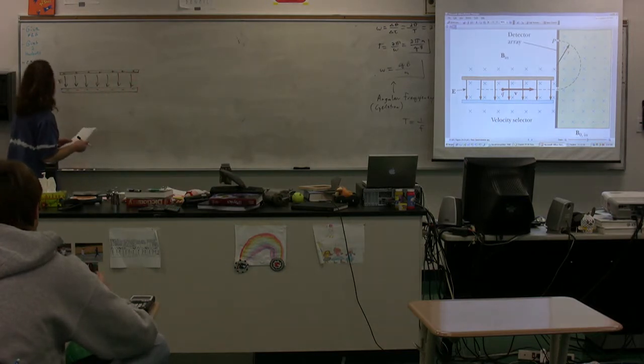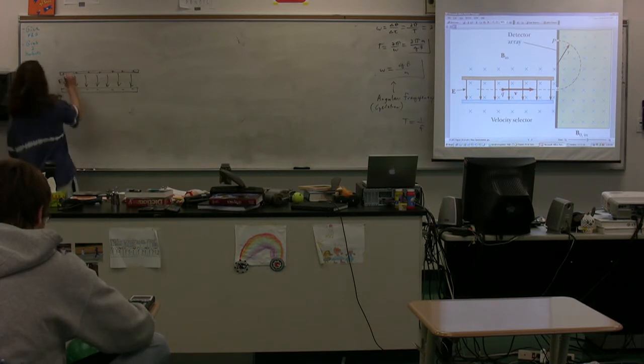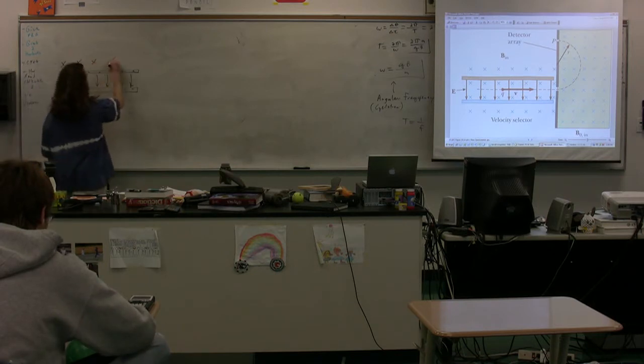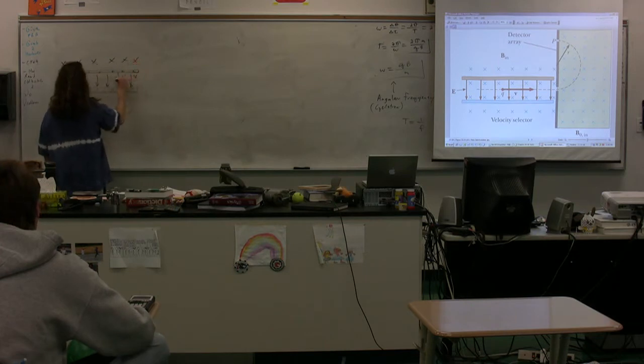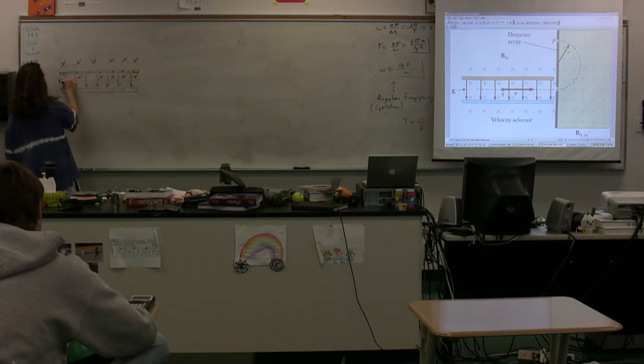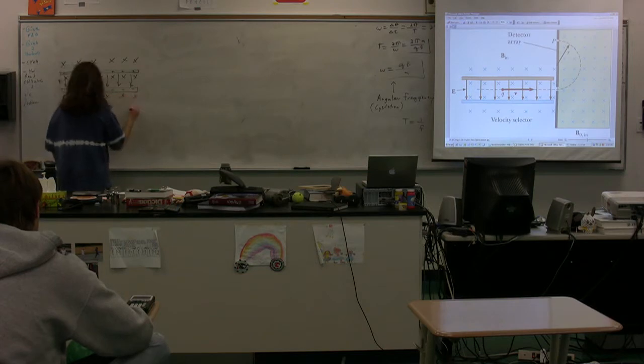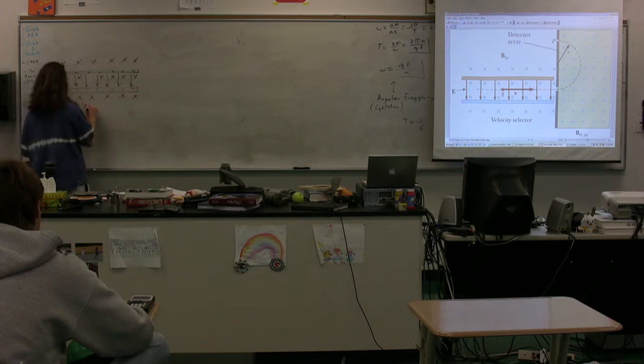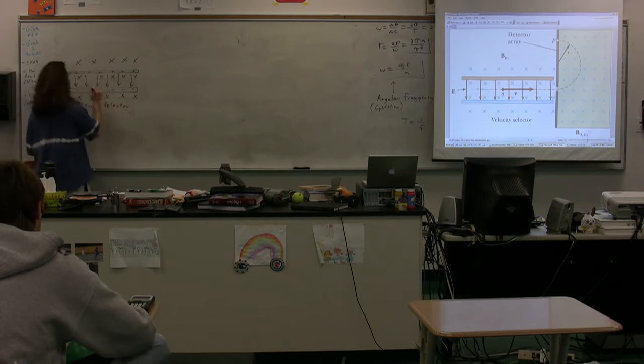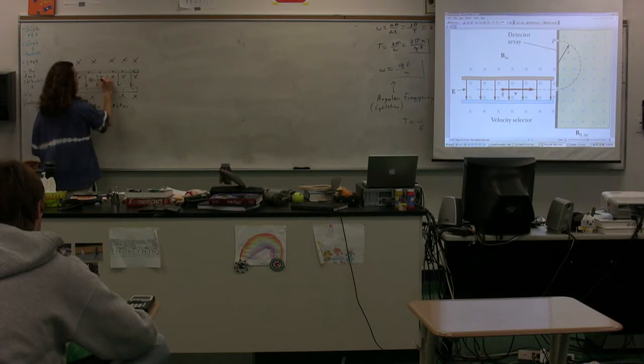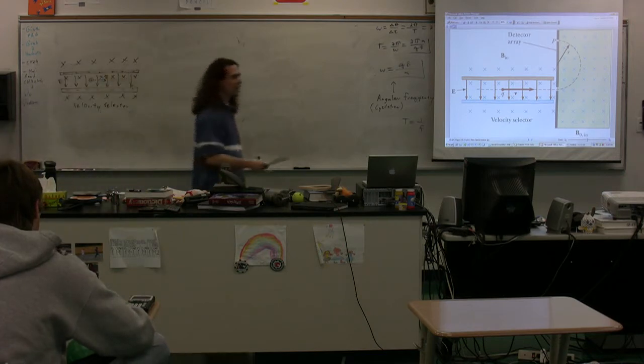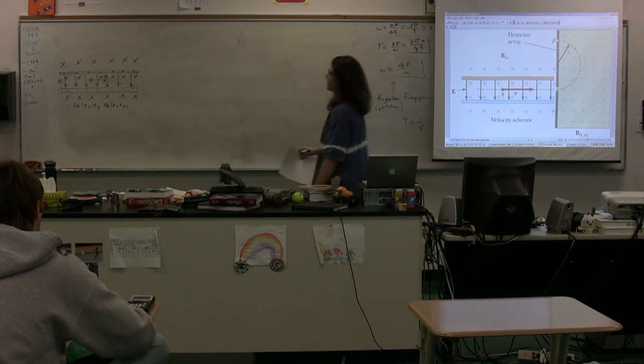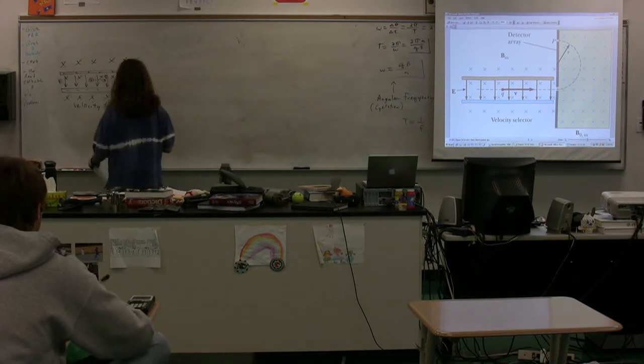In this part of the picture, we have a magnetic field which is into the paper. It's a constant magnetic field. This part is called the velocity selector. What we have is charges that are going through the velocity selector with some sort of velocity. While they are going through the velocity selector, we have forces acting on them.